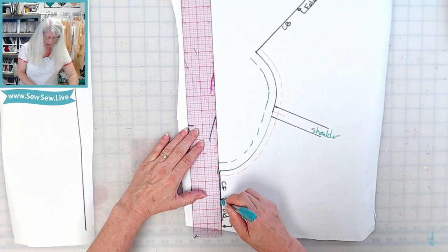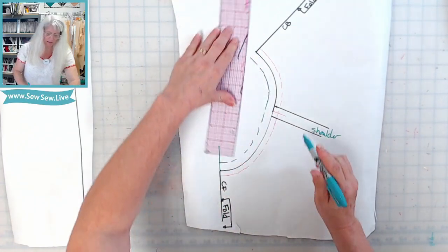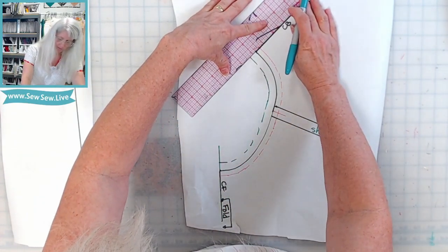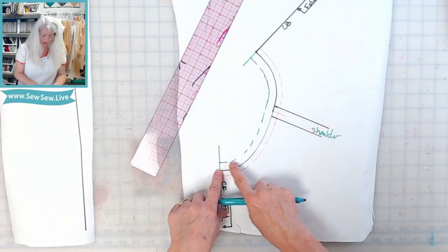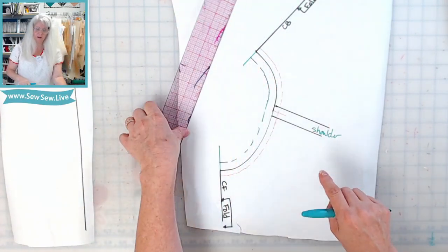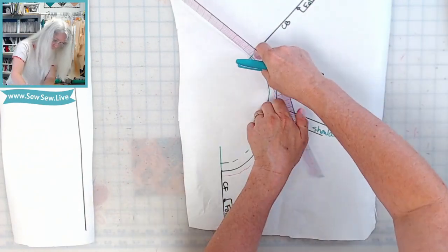All right, next I'm going to extend my center front and my center back all the way up through this line here. Now we're going to measure this line right here.